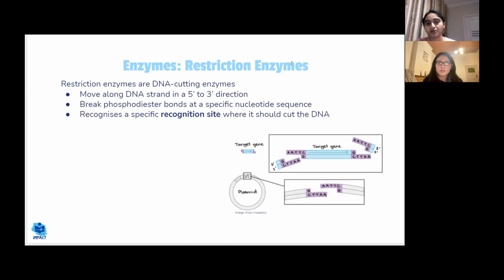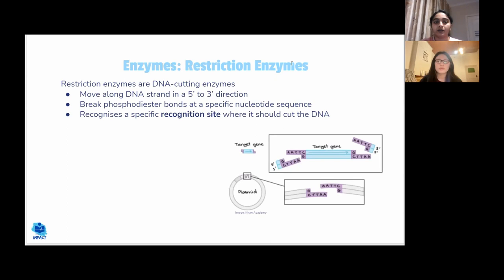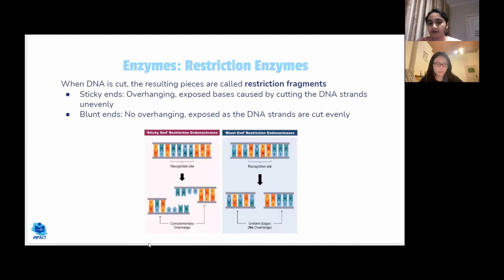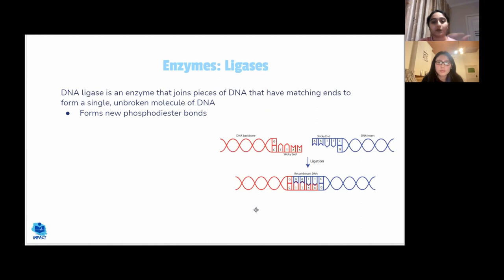Restriction enzymes, also known as endonucleases, cut DNA based on recognition sites. They can leave sticky ends — overhanging sections that allow fragments to bind via complementary base pairing — or blunt ends, which do not overhang. Ligases act like molecular glue to join DNA fragments. Specifically, ligases form phosphodiester bonds — the backbone bonds of the DNA strand — not the hydrogen bonds between nitrogenous bases, which form via complementary base pairing.